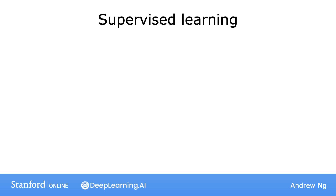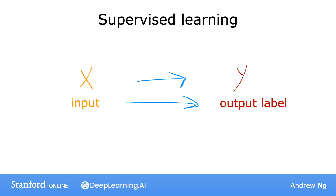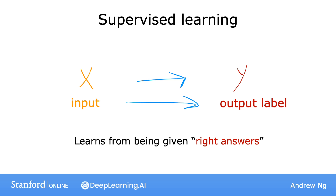Supervised machine learning, or more commonly supervised learning, refers to algorithms that learn x to y, or input to output mappings. The key characteristic of supervised learning is that you give your learning algorithm examples to learn from that include the right answers — where by right answer I mean the correct label y for a given input x. By seeing correct pairs of input x and desired output label y, the learning algorithm eventually learns to take just the input alone, without the output label, and gives a reasonably accurate prediction or guess of the output.